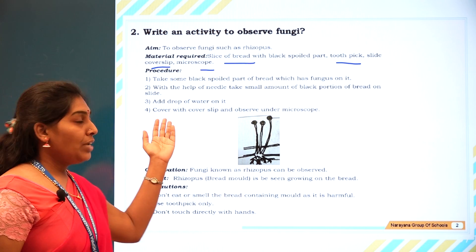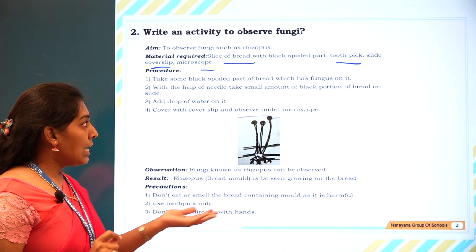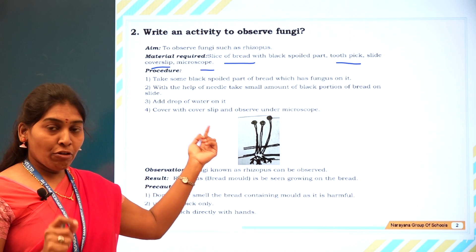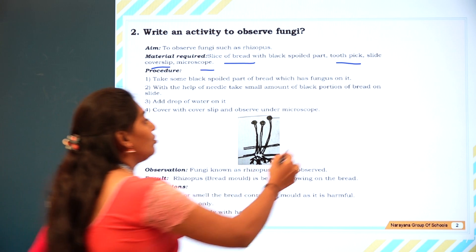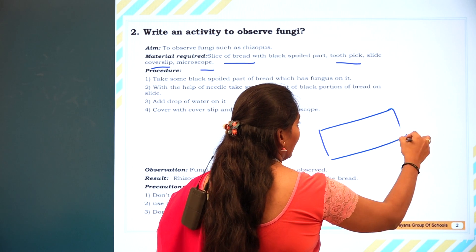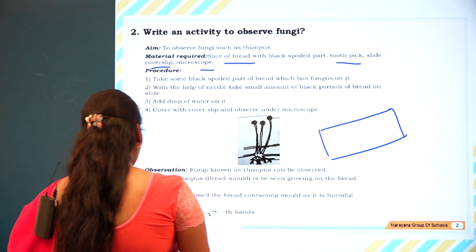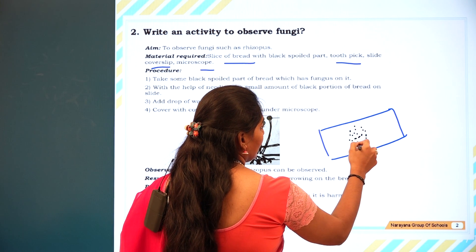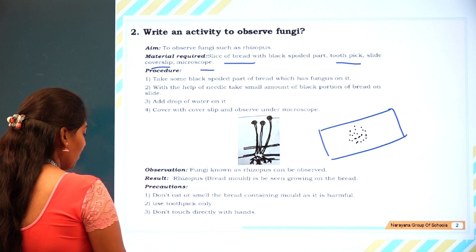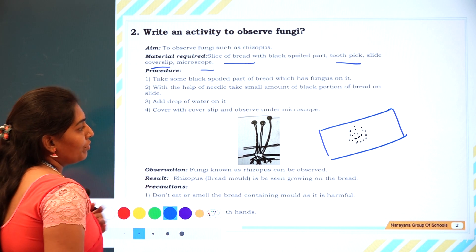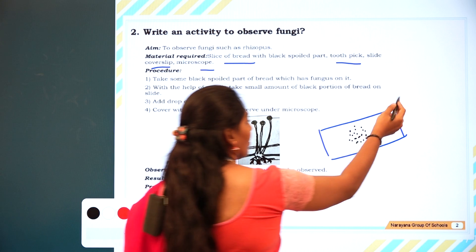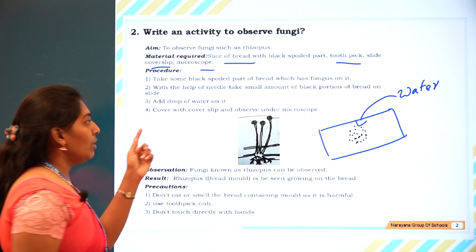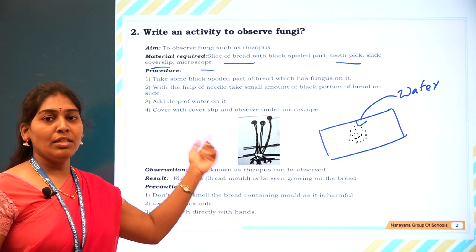Procedure: Take the spoiled part of the bread and place it on the slide with the help of a needle. Take the black powdery substances from the bread and place them on the slide. Add a drop of water on the slide, then observe it under the microscope.